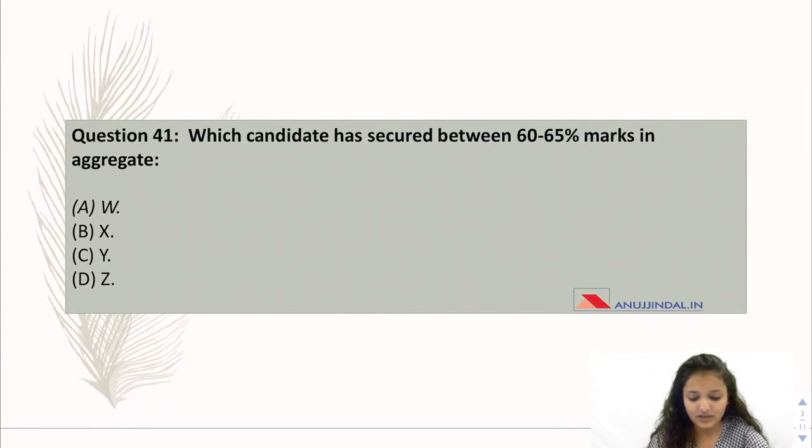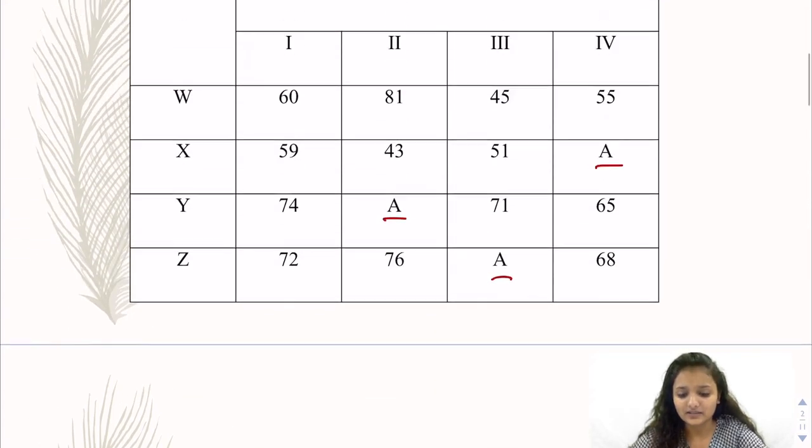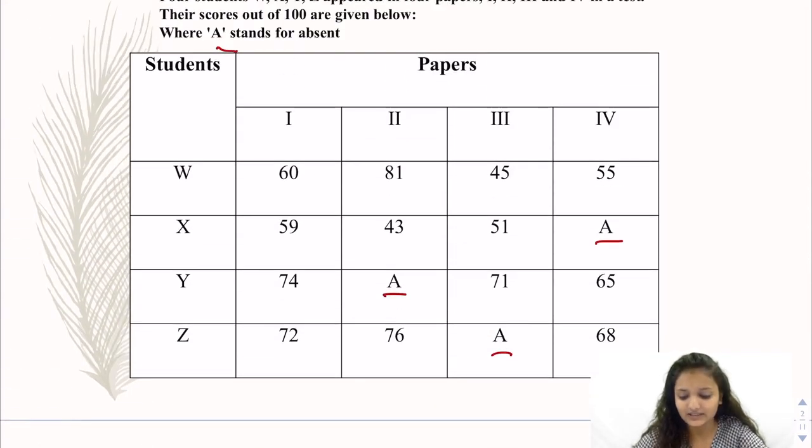The first question is, which candidate has secured between 60 to 65% marks in aggregate? So if you look at this section, X is 59, 43, 51. So in no case, 60 to 65% will lie. So this will be rejected, X.